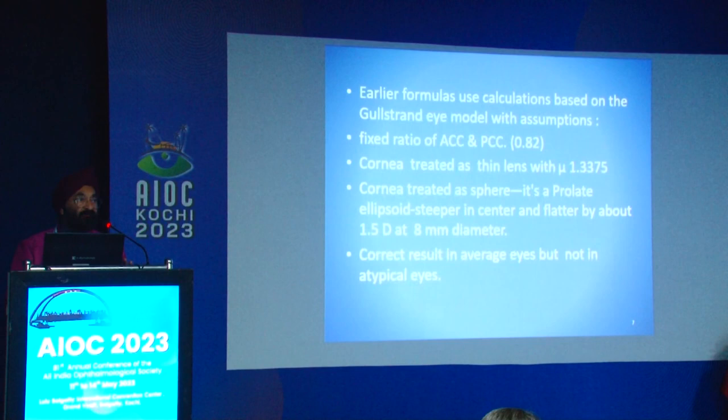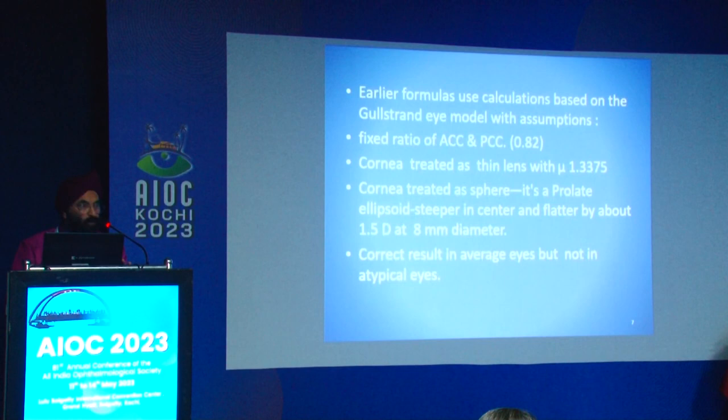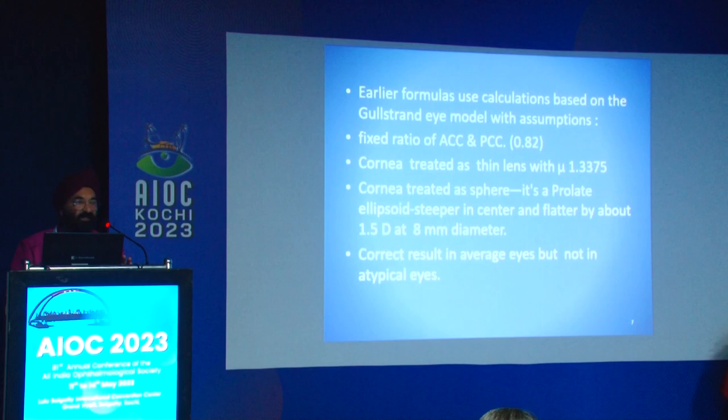Few subjects in ophthalmology are as complex as IOL power formulas because it involves mathematics, and we ophthalmologists are not very fond of mathematics. Earlier formulas made some assumptions: they assumed a fixed ratio of anterior and posterior corneal curvature of 0.82, treated the cornea as a thin lens with refractive index 1.3375 (actually 1.37), and treated the cornea as a prolate sphere. This gave correct results in average eyes but not in atypical eyes.